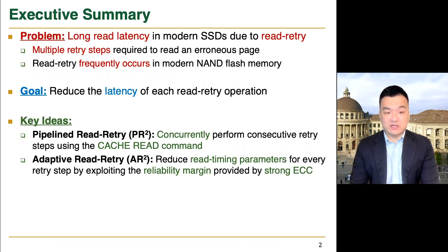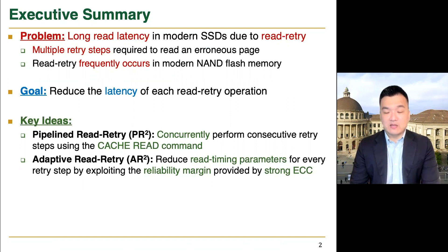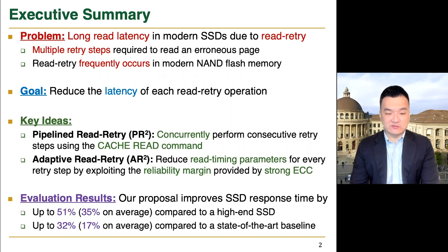First, we introduce Pipeline read retry, PRS for short, that concurrently performs consecutive retry steps using the advanced cache read commands. Second, we introduce the adaptive read retry, ARS for short, that reduces the read timing parameters for every retry step by exploiting the reliability margin provided by strong error correcting codes. Our proposal improves SSD response time by up to 51% compared to a high-end SSD, and by up to 32% compared to a state-of-the-art read retry mitigation technique, respectively.